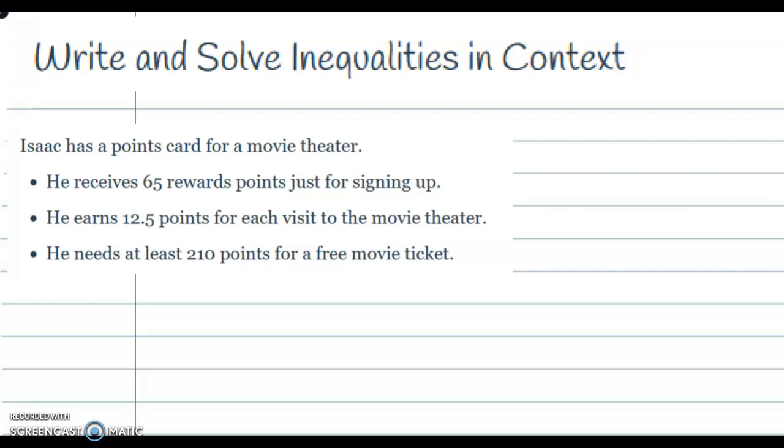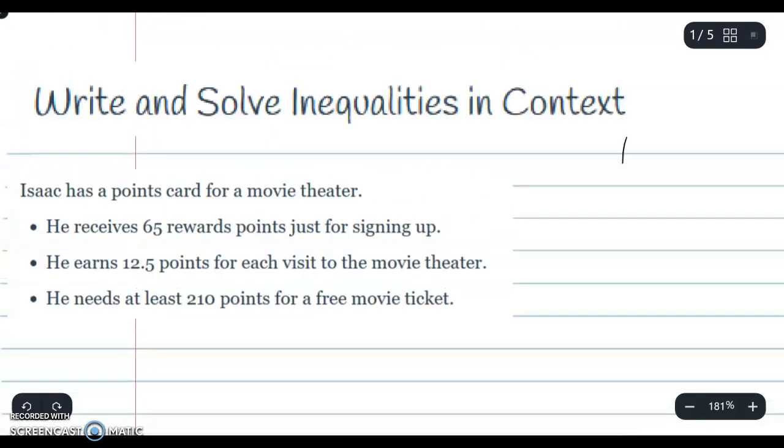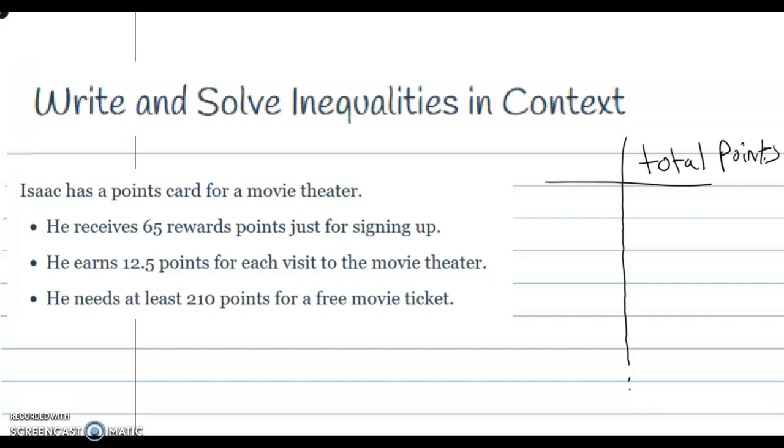Alright, so I've got a table. Over here on one side I got the total points and on my left side I've got the visits, every visit. You can put T for total points or V for visit.